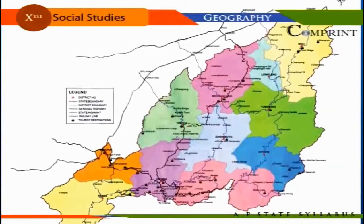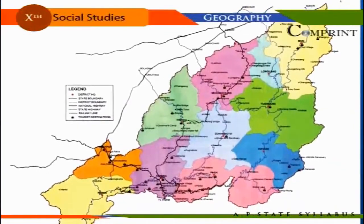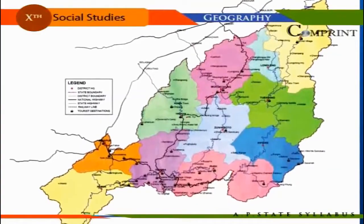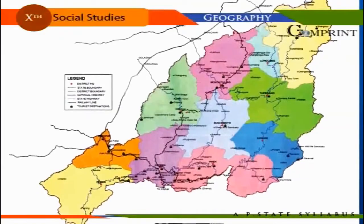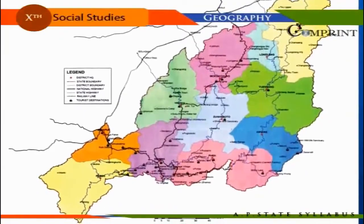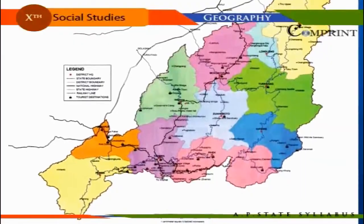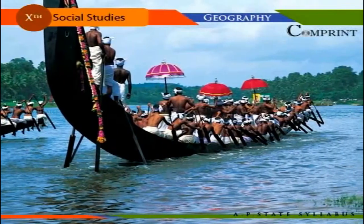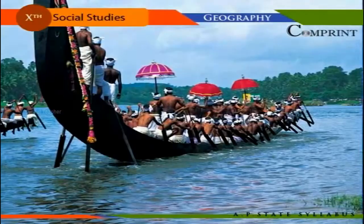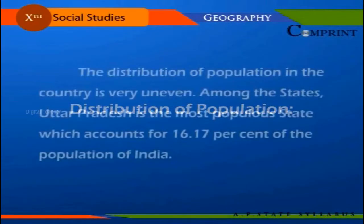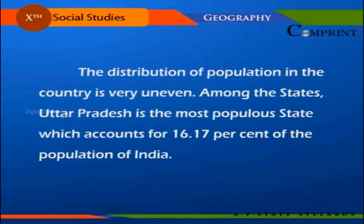During 1991 to 2001, the average rate of population growth in India was registered as 21.34%. Within the country, there has been significant spatial variation in the rate of population growth among states. The highest population growth rate was registered in Nagaland at 64.41%.